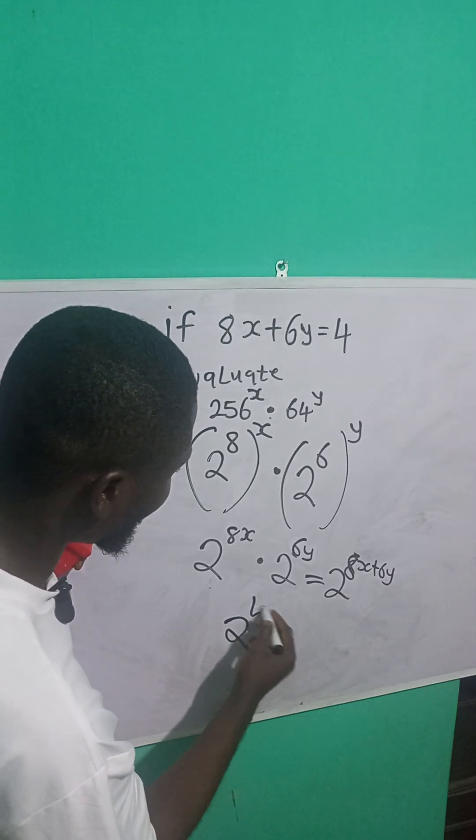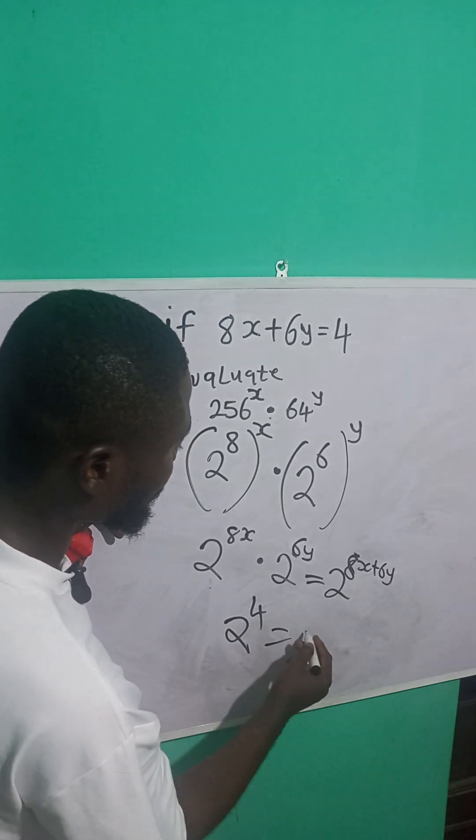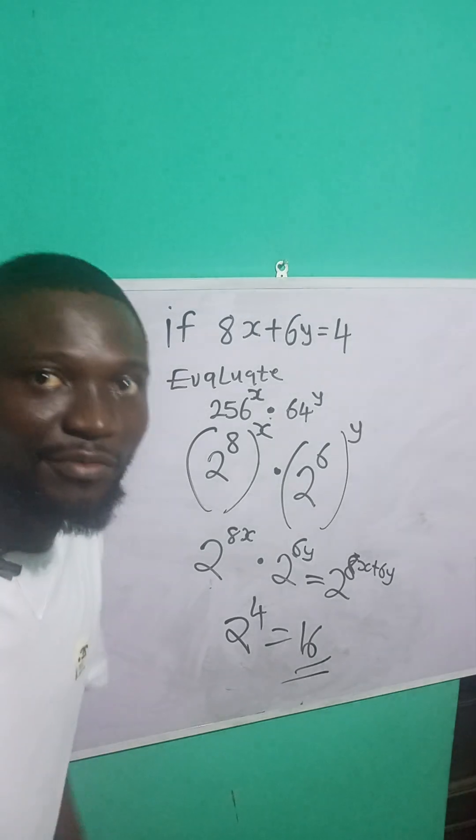So this becomes 2 raised to power of what? 4. And 2 raised to power of 4 is what? 16. So our answer is 16. Bye.